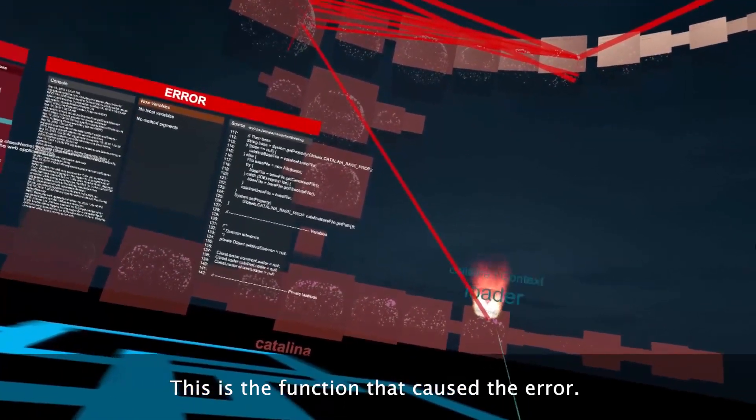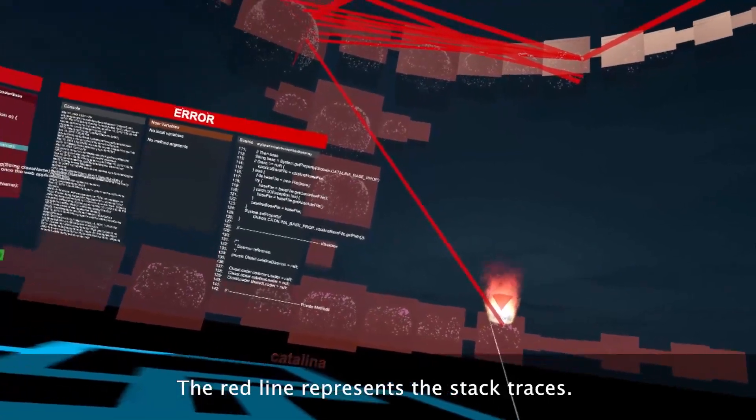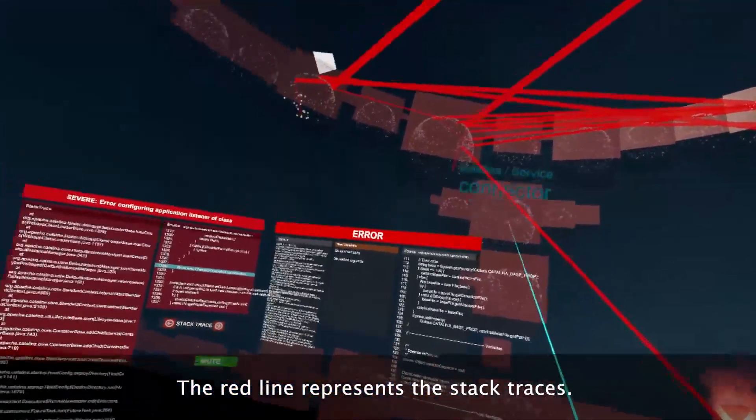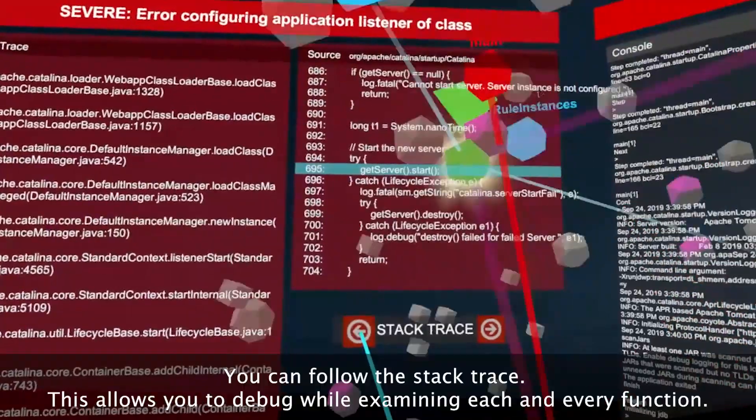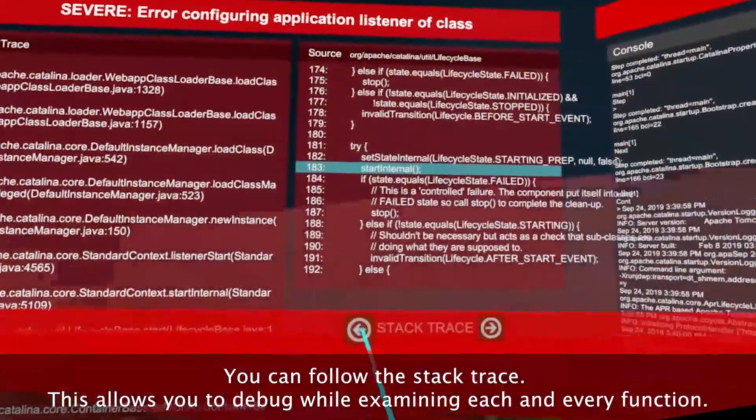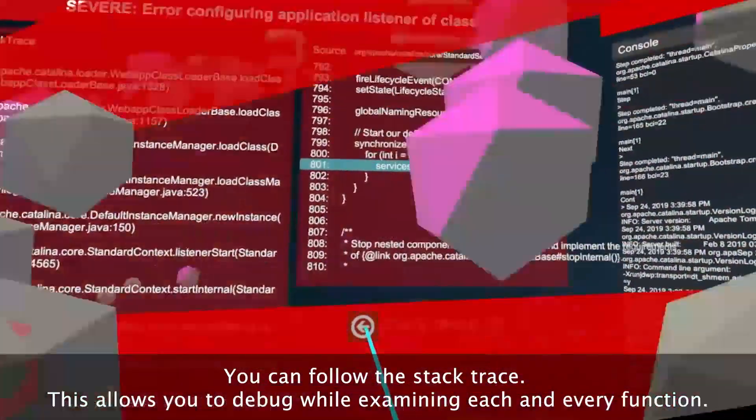This is the function that caused the error. The red line represents the stack traces. You can follow the stack trace. This allows you to debug while examining each and every function.